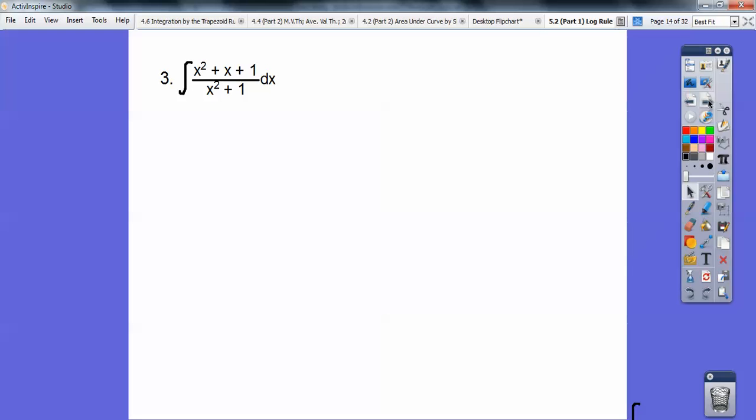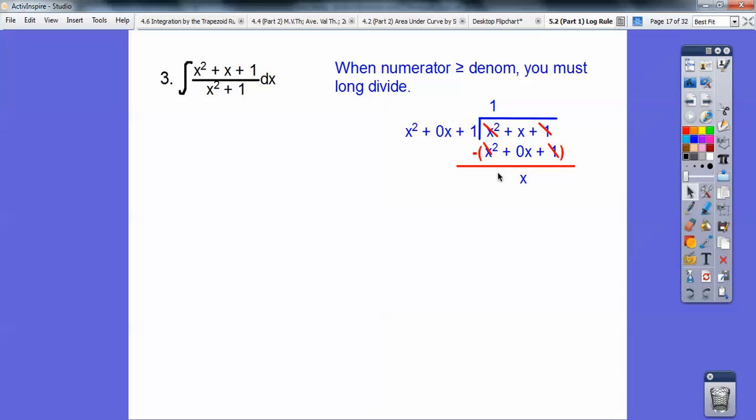On this one here, whenever you have the numerator greater than or equal to the denominator, you have to long divide. Long dividing right there, x squared times 1 will get me x squared. I multiply 1 times this. I like inserting a 0 because it will appear when I start subtracting, just for spacing. Subtract and slide this down, that's my remainder. So if you start at the top, this equals 1 plus x over what we're dividing by. Put it back in, so it's 1 plus x over what we're dividing by right there.